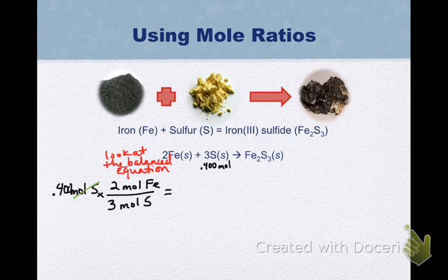Moles of sulfur on top cancels moles of sulfur on the bottom. I'm left with moles of iron. By doing the math of 0.4 times 2 divided by 3, I end up getting a value of 0.267 moles of iron.